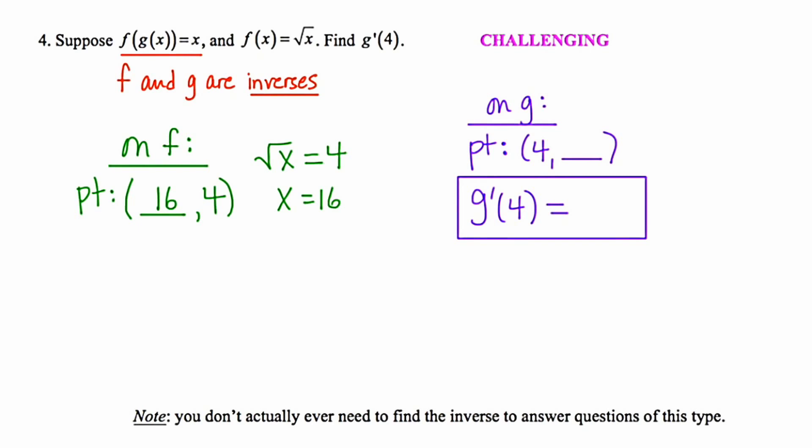And knowing this helps us with the graph of g. We know that if the point (16, 4) exists on the graph of f, that the point (4, 16) exists on the graph of g.